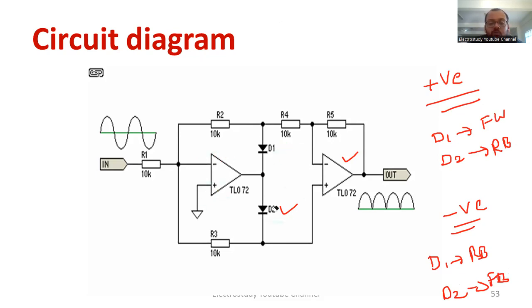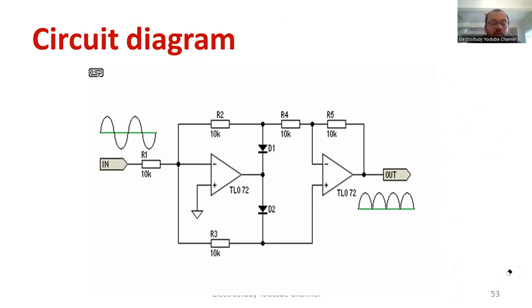What we are supposed to do is this: you can generate a sinusoidal signal using the function generator. Then that function generator can be given as an input of this particular circuit. Then you should get the rectified output. That is the idea about the entire circuit.